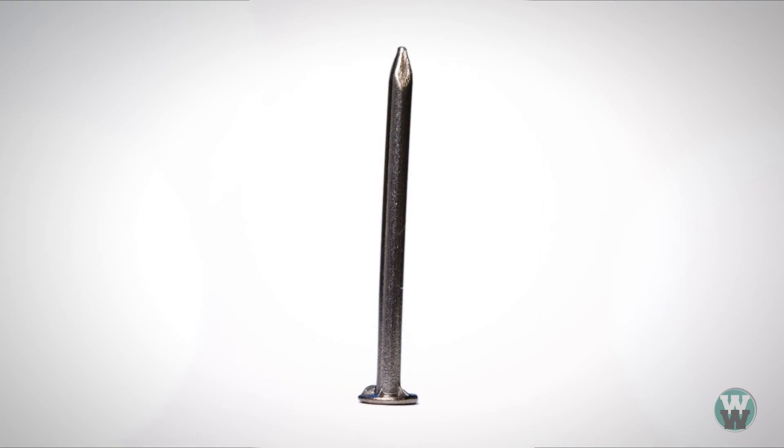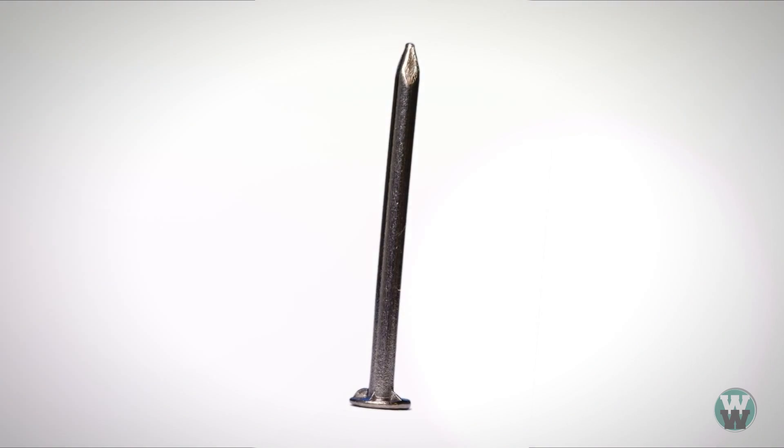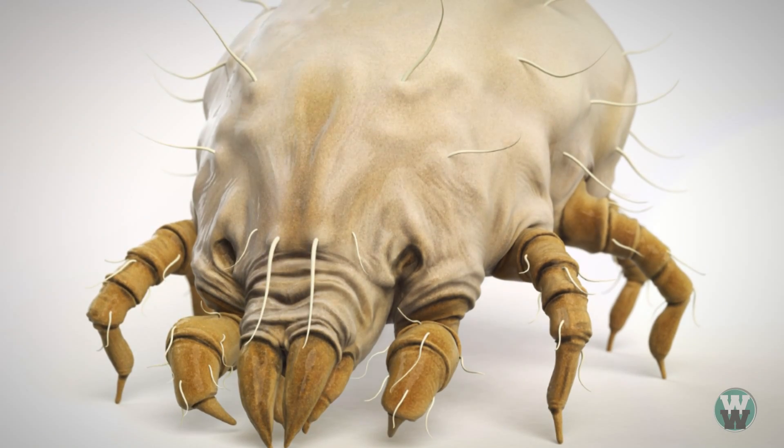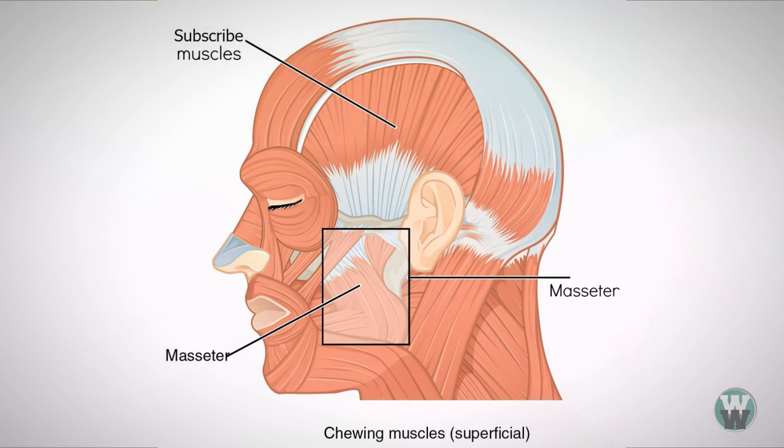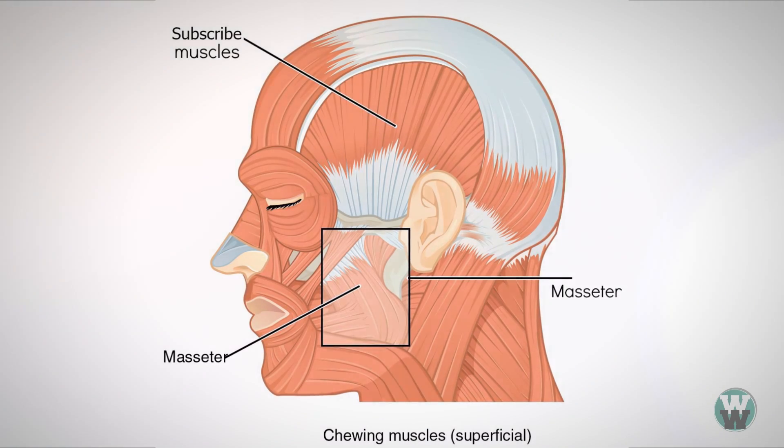Your body has enough iron in it to make a metal nail three inches long. We all have tiny mites living in our eyelashes. The strongest muscle in the human body is the masseter, also known as the jaw muscle.